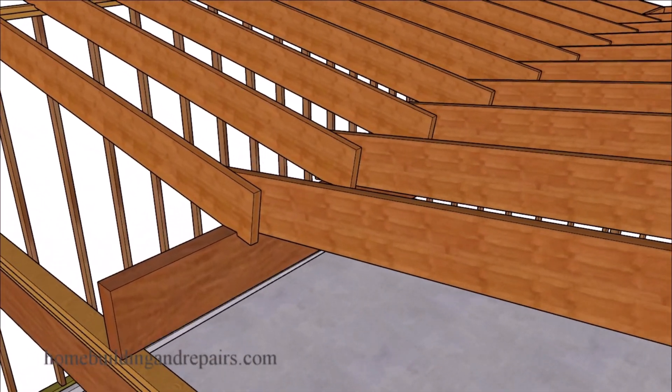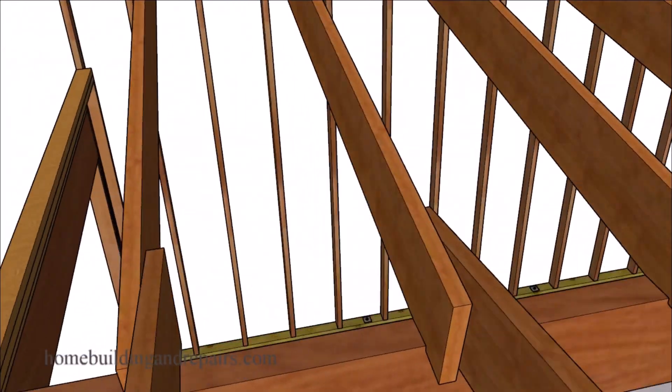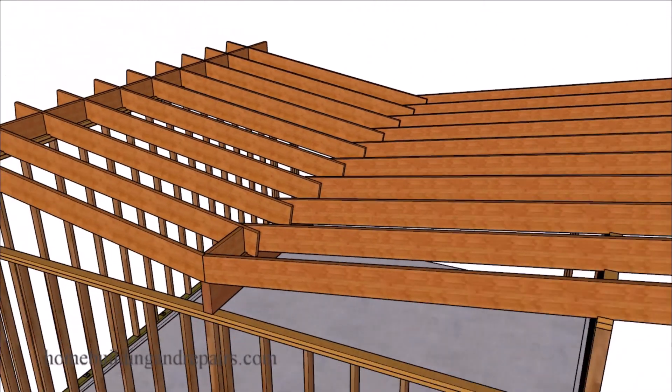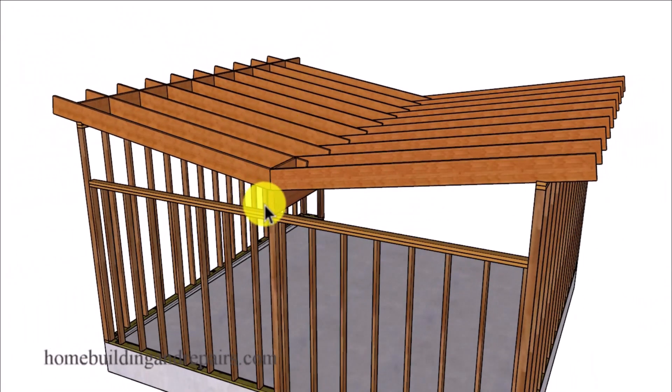So here you can see where the rafters are sitting on top of the beam. You can always lower the beam if you need to or raise it, or rotate the roof 90 degrees so that the beam is not sitting on top of the garage door header. And there you have it.